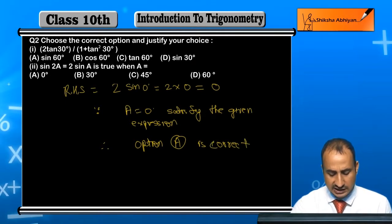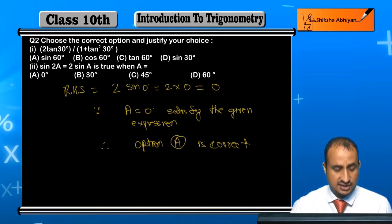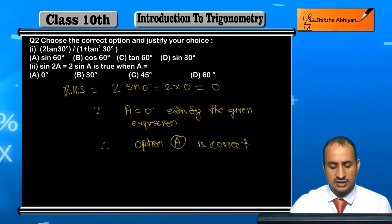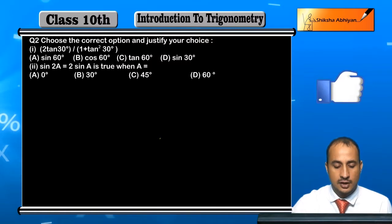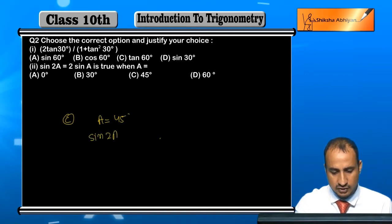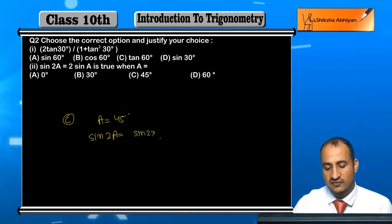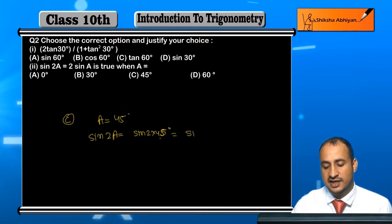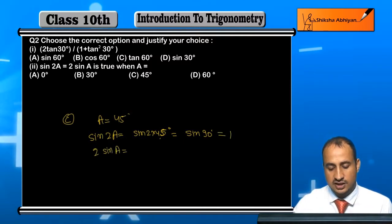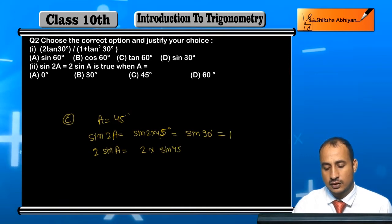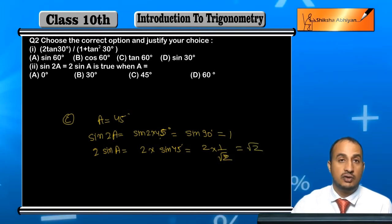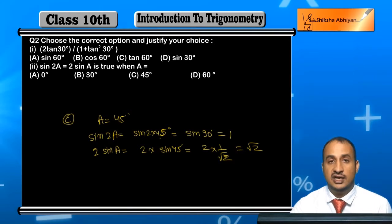Students, try putting 30°, 45°, 60° — it will not work. Let's verify with c: put A = 45°. LHS = sin(2×45°) = sin90° = 1. But RHS = 2sin45° = 2 × (1/√2) = √2. Both are not equal. Similarly for 60° and 30°, they will also not be equal.